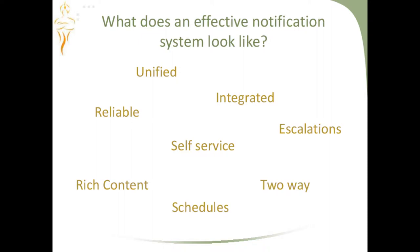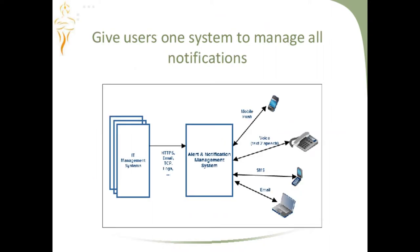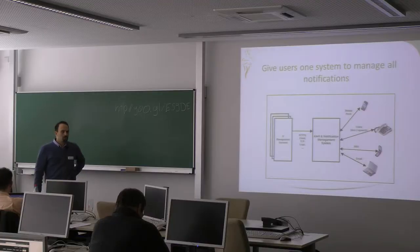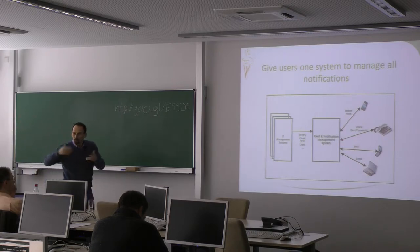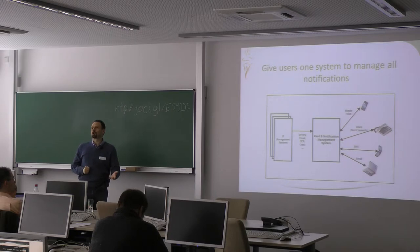So what should an effective notification system do? One of the first things, in my opinion, is that it should give users a single place — a single system — to manage all their notification stuff. Even in a small company like ours, we use six different tools to monitor the infrastructure and applications: one for Java applications, one that monitors from outside via synthetic web calls, one for systems resources, another to collect logs, and custom-built tools for application and business metrics.